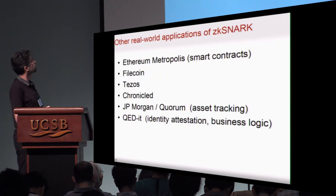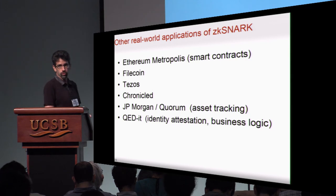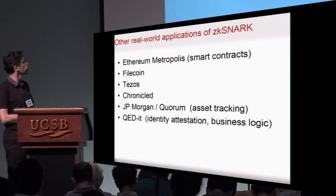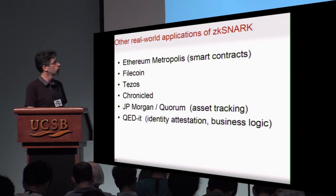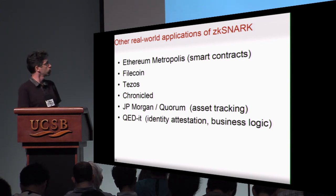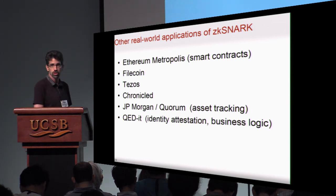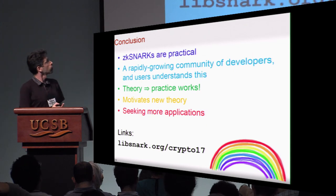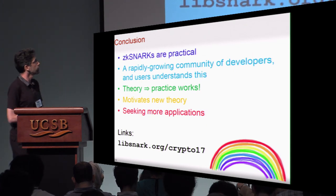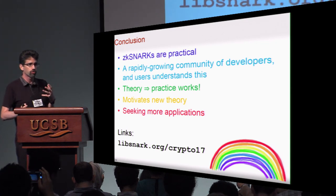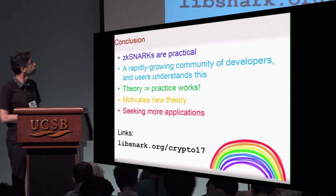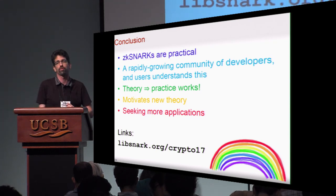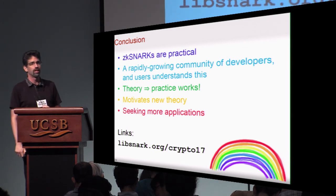There are many other emerging applications in the blockchain and commercial realm, including the next version of Ethereum that's adding ZK-SNARK support, several other companies and blockchains. JP Morgan and its Quorum system are adding support for SNARKs, as well as a company called Kedit that is working on identity attestation, business logic, application provenance, and tracking using SNARKs. To summarize, ZK-SNARKs really are practical, and there's a rapidly growing community of developers, users, and enthusiasts exploring new applications. This is a great example of the theory-to-practice transition — it motivates new theory questions and opens up the question of what the next applications to build will be.